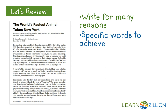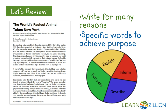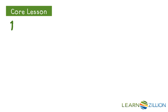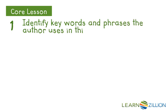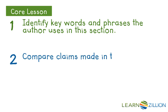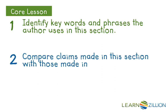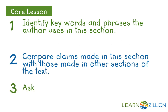Authors use specific words or rhetoric to get their message across to the reader. We are going to re-read the text closely, asking ourselves: what is the author trying to tell me in this section? In order to do that, we are going to follow three steps. Step 1: Identify key words and phrases the author uses in this section. Step 2: Compare claims made in this section with those made in other sections of the text. Step 3: Ask, why did the author include this section?